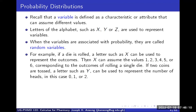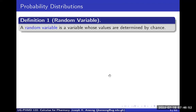For example, if a die is rolled, a letter such as X can be used to represent the outcomes. When you roll a die, the numbers that show up are from one to six, so you can let X be any of these numbers to represent them as a random variable. If you toss two coins, you could have zero, one, or two heads. So you can let Y represent the number of heads, where Y assumes the values zero, one, or two.